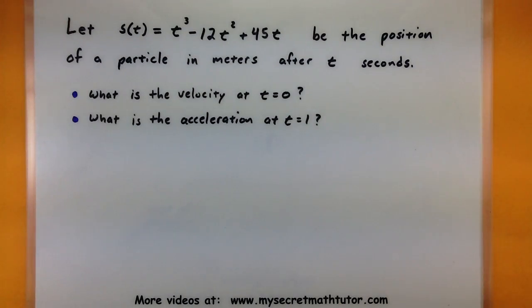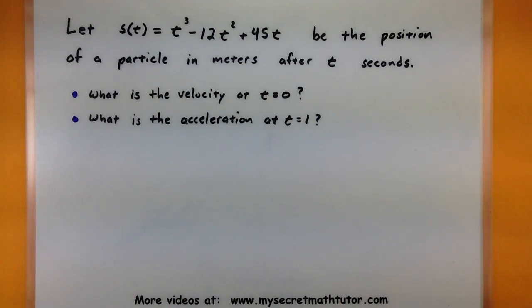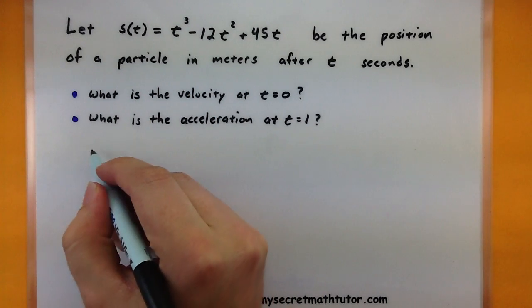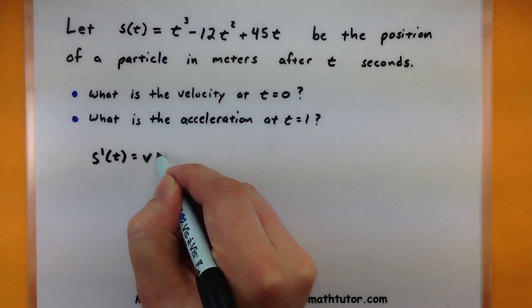First of all, what is the velocity of this particle after t equals zero? Notice how we're getting that key term in here, velocity, and we want to know what is the first derivative of this position function. So let's find one derivative of this thing and mark it as our velocity.